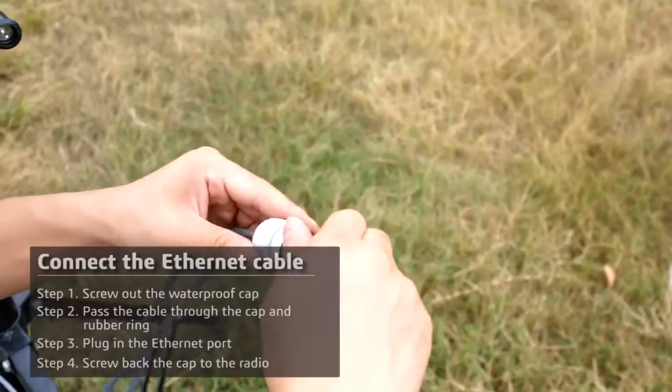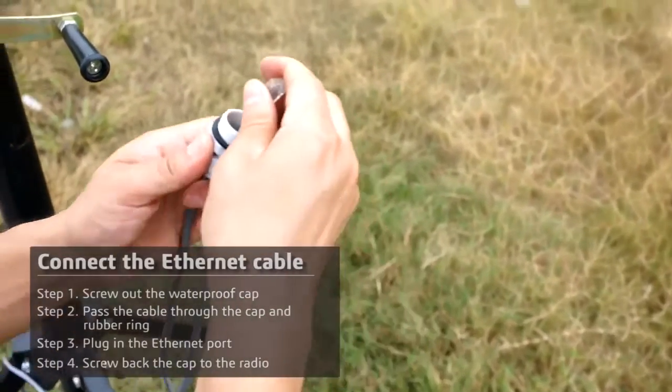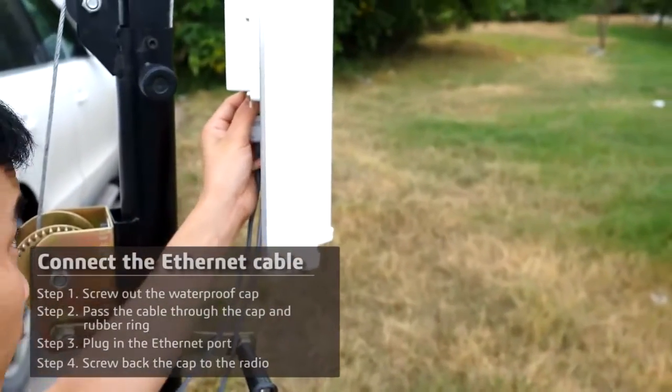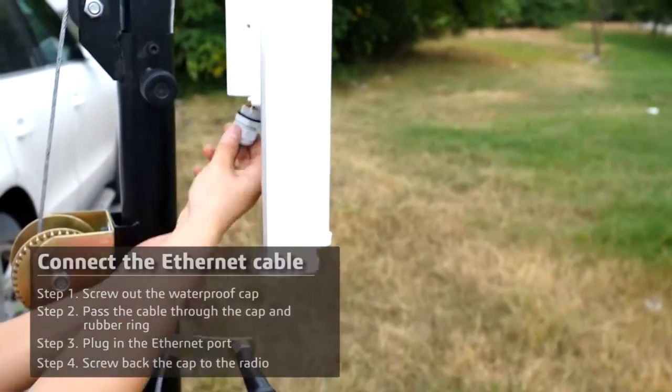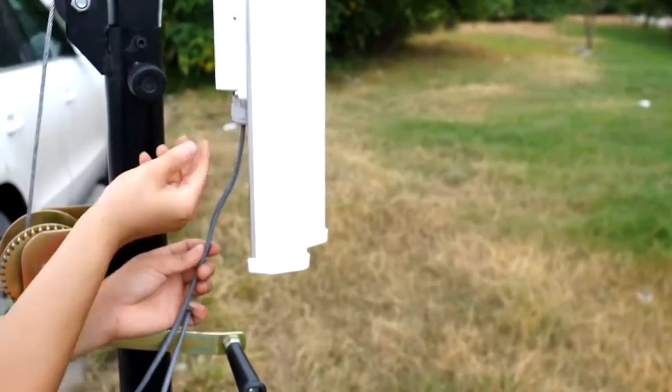And then screw on the bottom cap, plug in the ethernet port to the radio, and screw back on the waterproof cap.